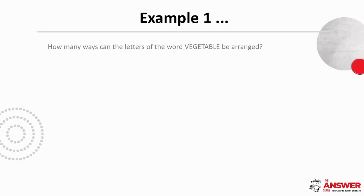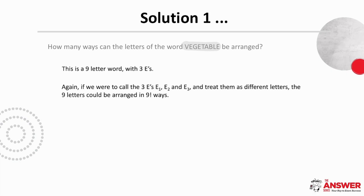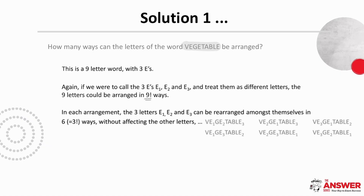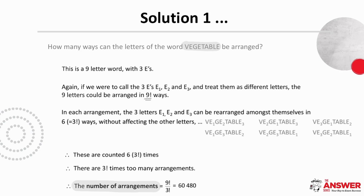Let's look at an example: how many ways can the letters of the word 'vegetable' be arranged? We start by counting the letters — there are nine — and checking for repeated letters. In 'vegetable' there are three E's. If each letter was different there would be nine factorial arrangements, but we need to account for the extra arrangements due to the repeated E's. For each arrangement, the three E's can be rearranged in three factorial ways, so there are three factorial times too many. The number of arrangements is nine factorial over three factorial, which is 60,480.